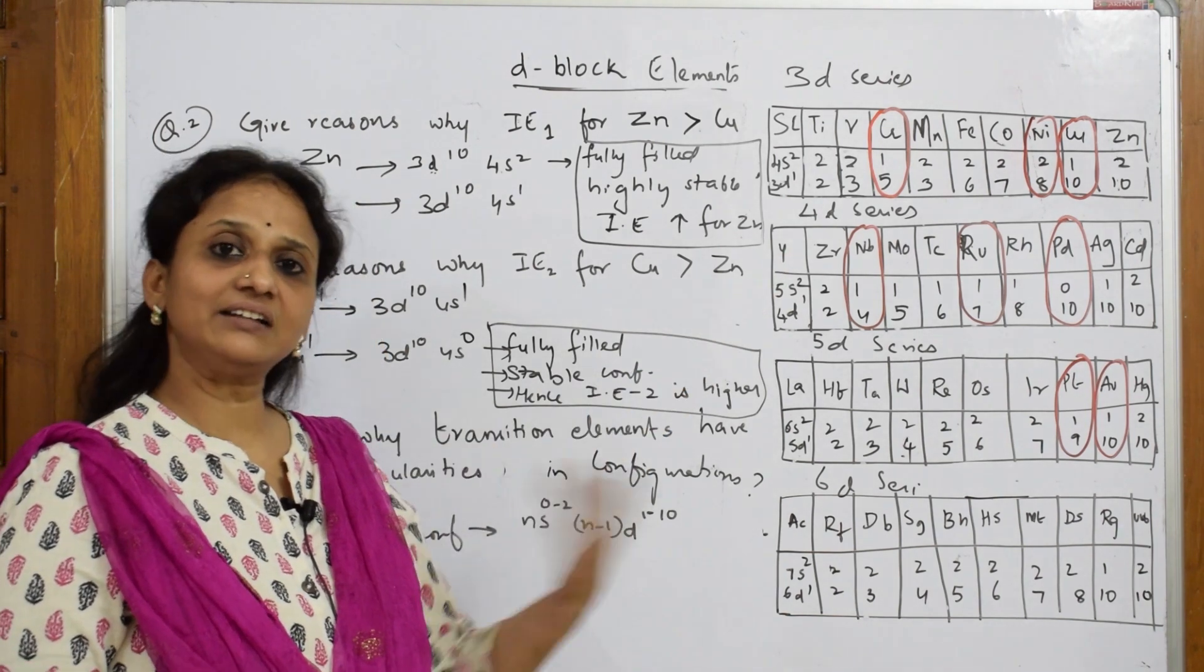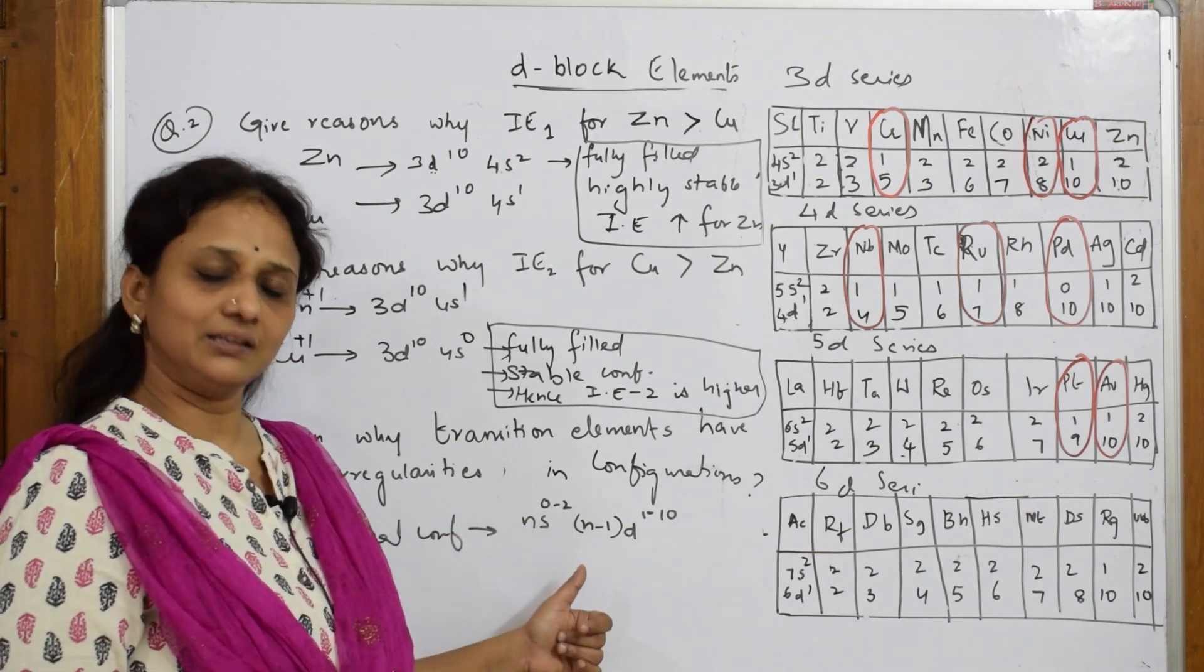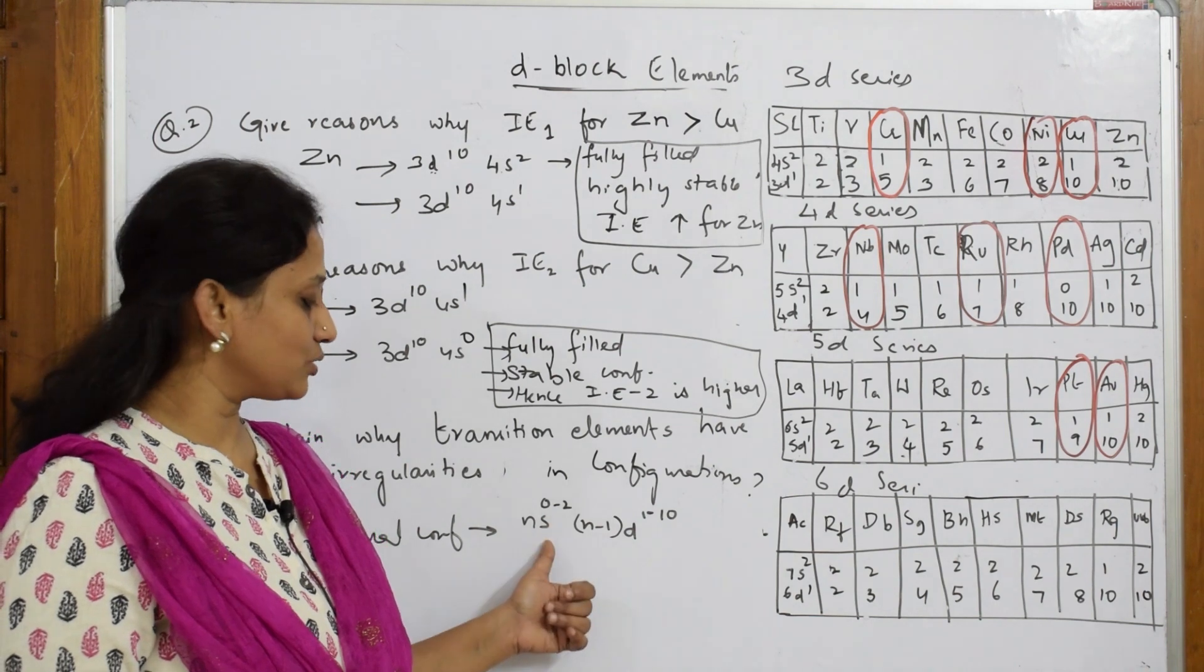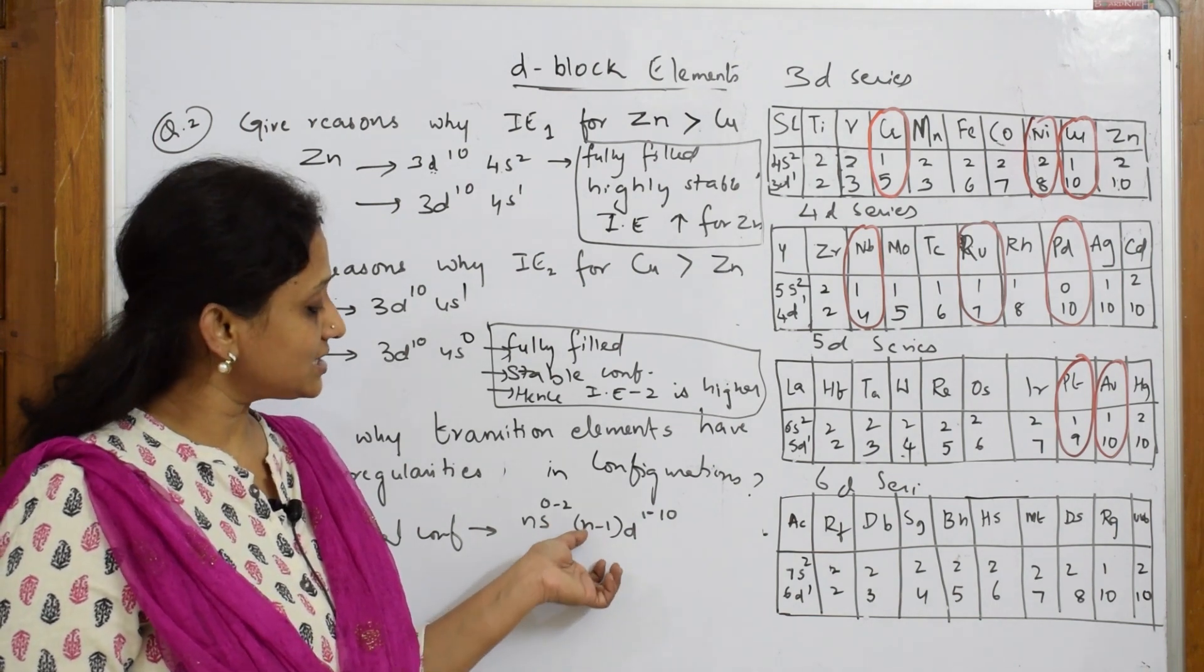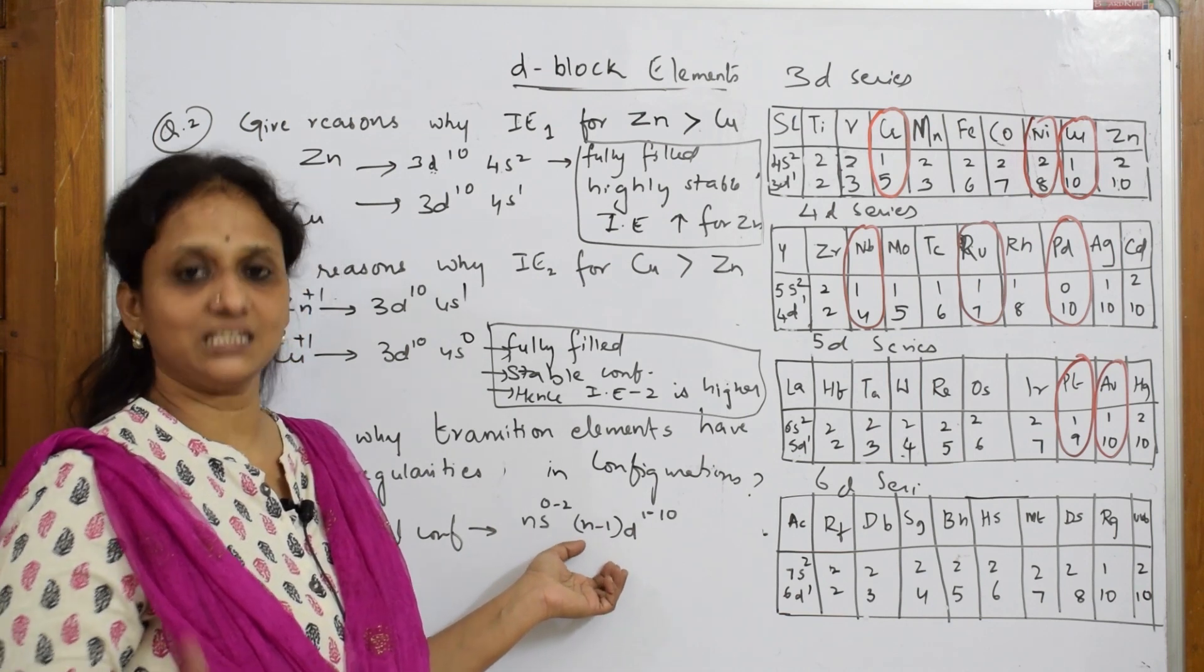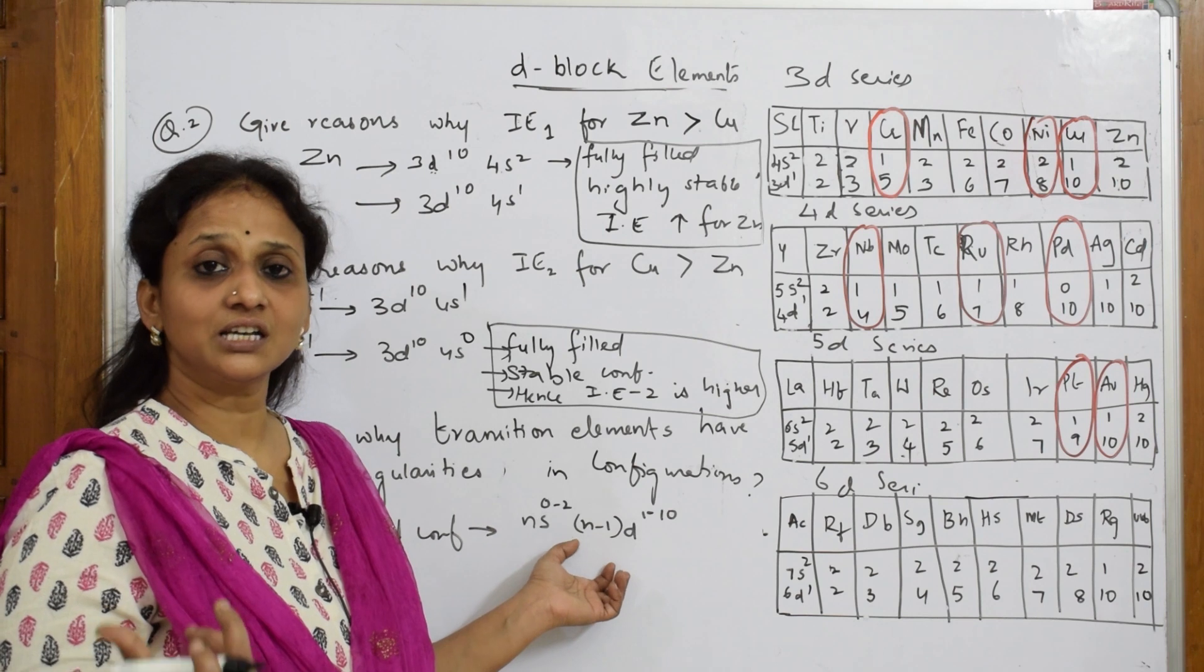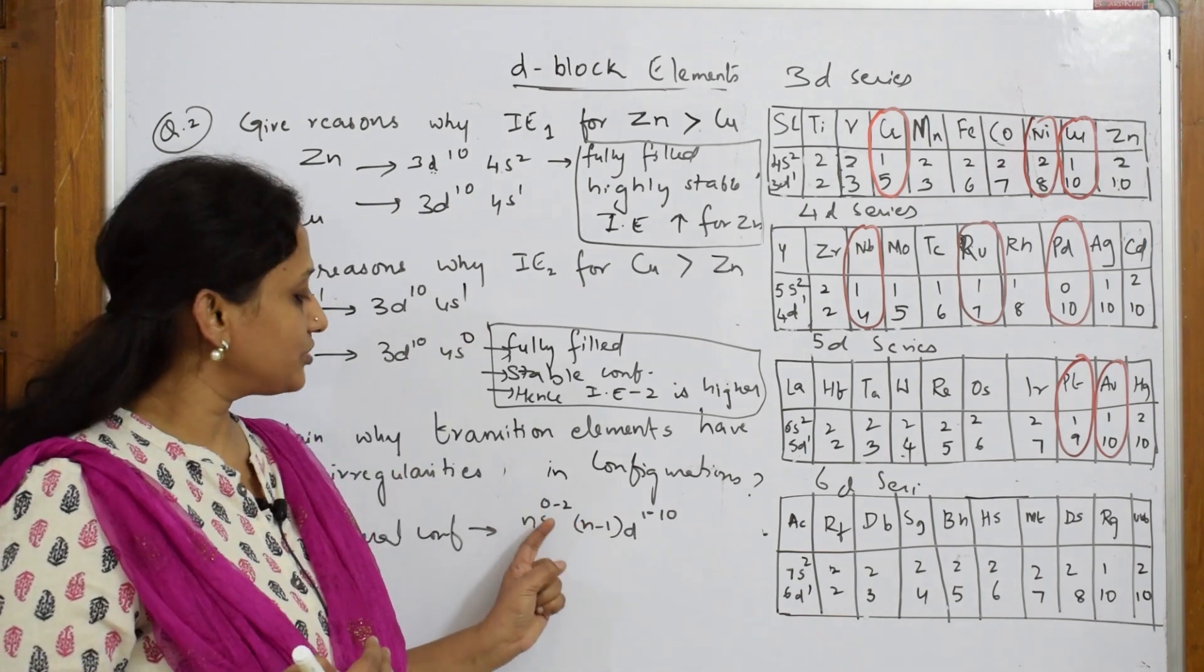Now what's happening? Why is it showing difference? Because the energy difference between ns and nd is very less. That's why the electron which is entering, it can either enter into nd or it can enter into ns also. The possibility of entering the electron into ns and n minus 1 d is easy because why? Because the difference of energy level - the electron can easily excite to that state.